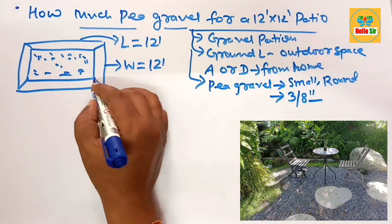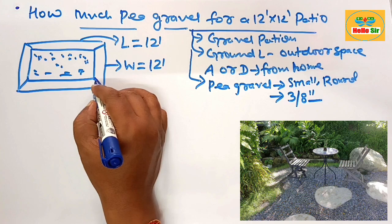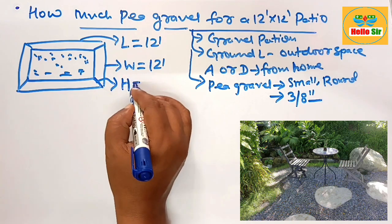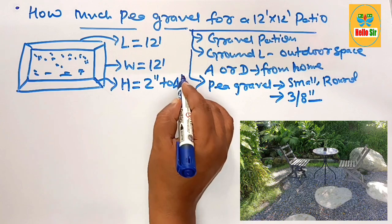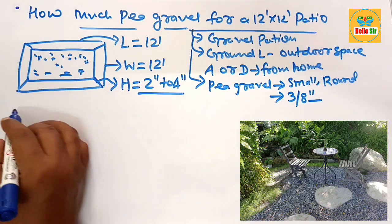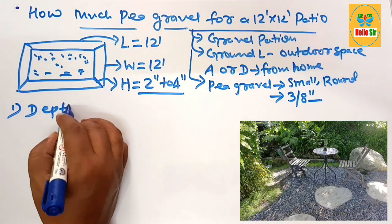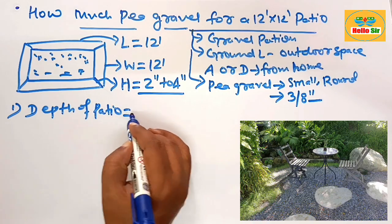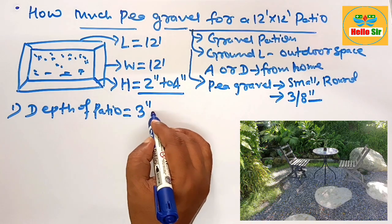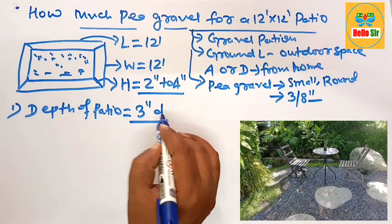And what will be the height? The height or depth of patio range from 2 inches to 4 inches thick and here you take the depth of patio is about 3 inches deep, remember this one.